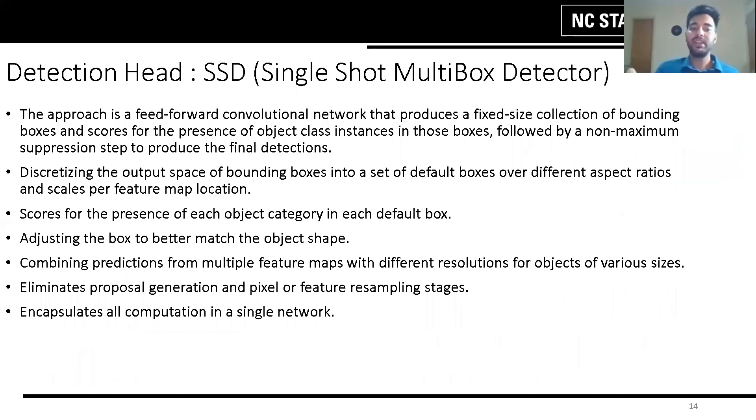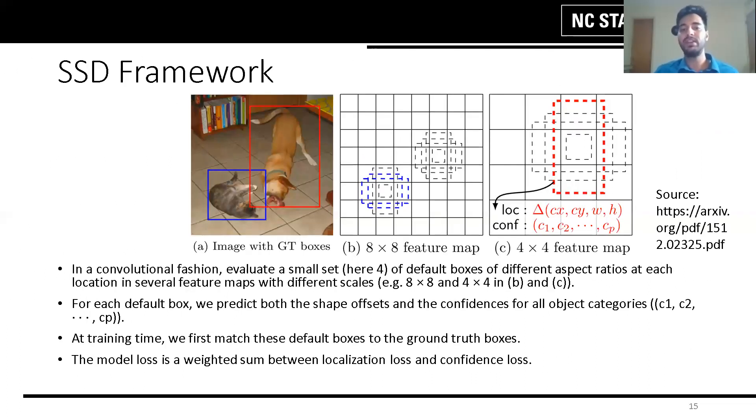Now moving on to the detection head stage. It follows a single shot detection. The features from the backbone are used by the detection head to predict the 3D bounding boxes for objects. The approach is a feed-forward CNN that produces a fixed-size collection of bounding boxes and scores for the presence of object class instances in those boxes. Then a non-max suppression is done to produce the final detection.